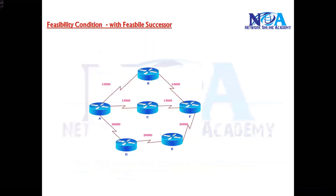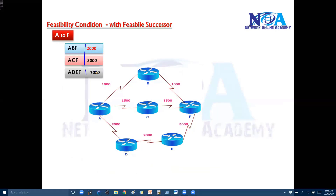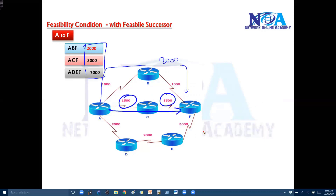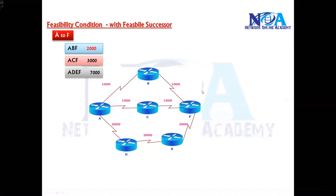Let's understand the condition with some examples. I'm using two different examples: one with a feasible successor, and the next slide will be without a feasible successor. Assume this topology goes from A to F. These are the individual metrics you can see here — 2000 on the first route, 3000 on the second route, and 7000 via the third route.